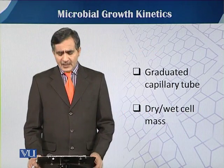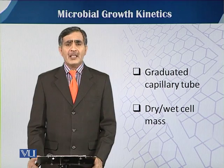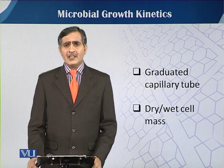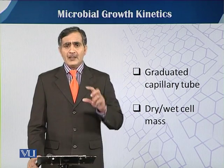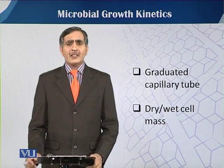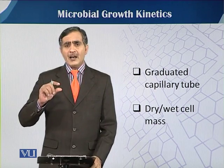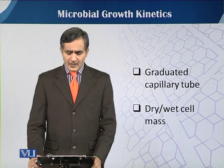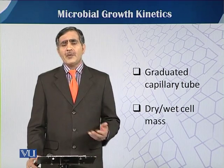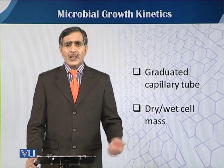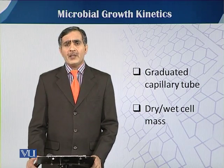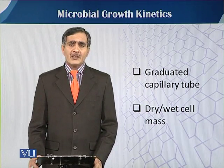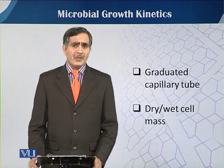The fifth method, the graduated capillary tube, is mostly used in yeast culture. The culture is centrifuged in a graduated capillary tube, and after centrifugation, we estimate the height of the pellet to determine culture growth. Similarly, for dry and wet cell mass, we centrifuge and weigh the pellet as wet mass, or dry it in an oven to estimate the dry weight. By these six different methods, we can estimate the growth in any fermentation vessel.